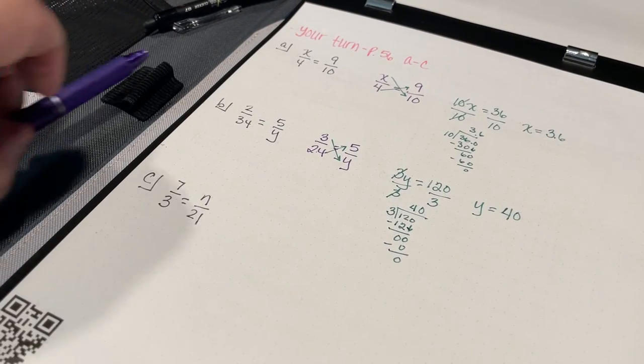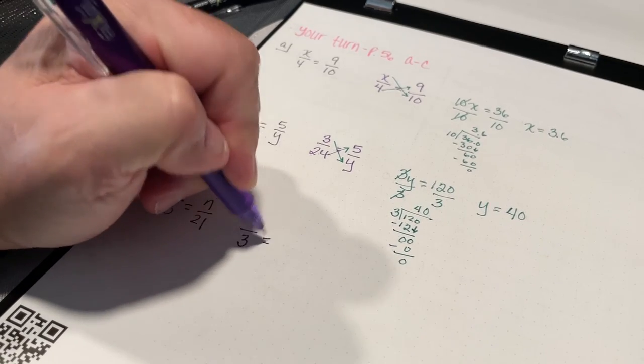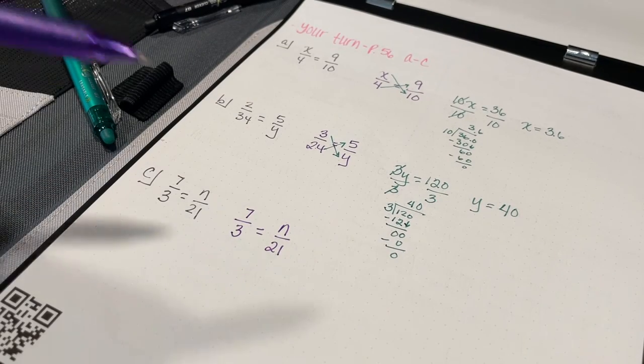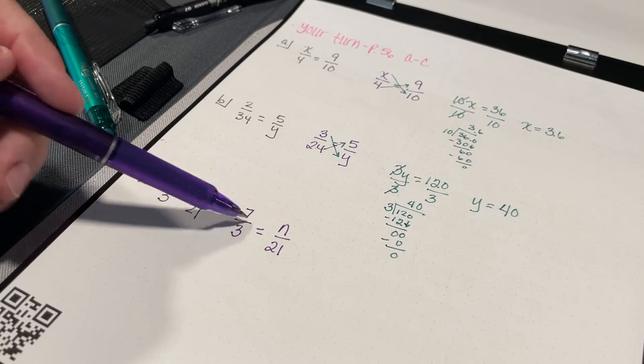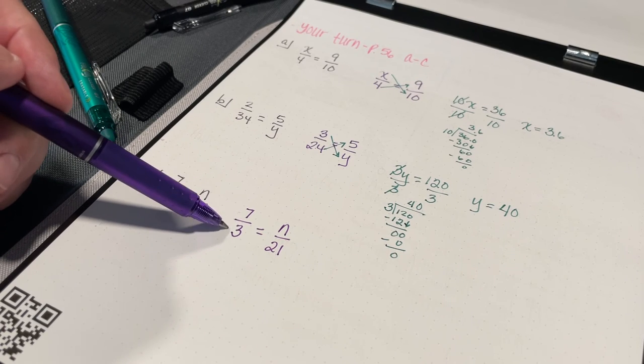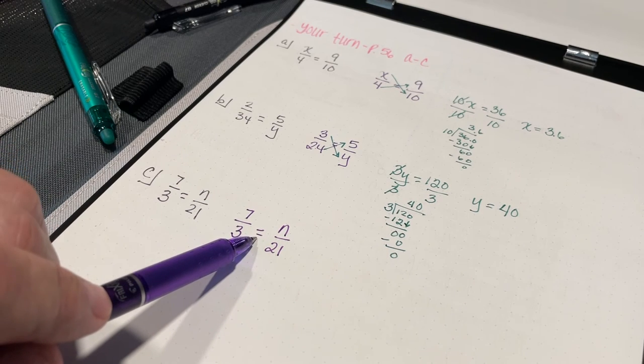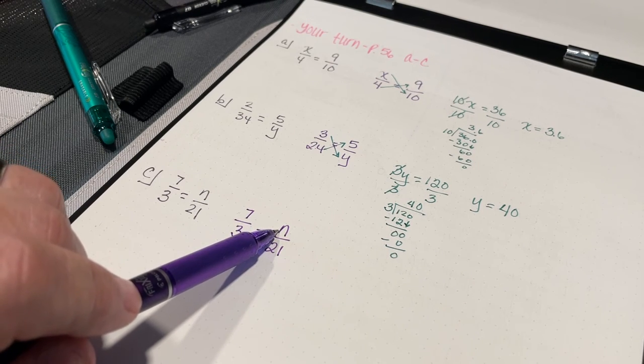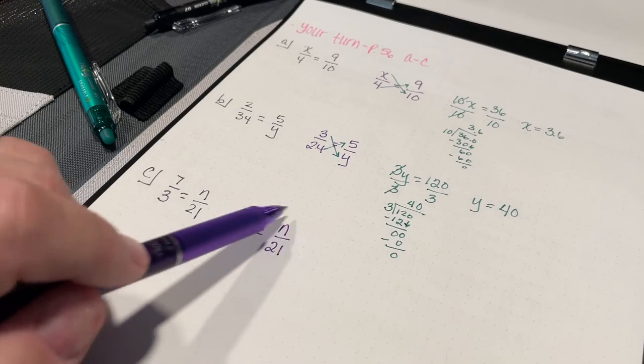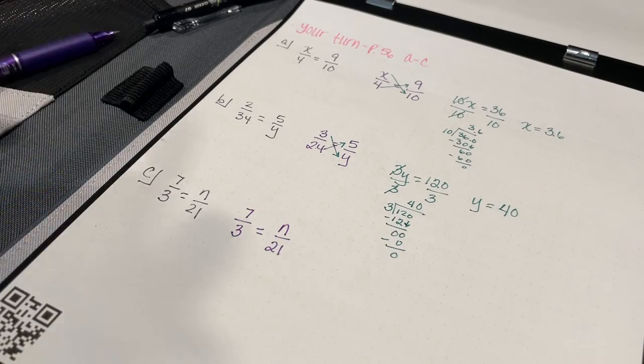Now let me do the last one here. 7 thirds, or 7 over 3, equals n over 21. Now before I even solve this, I just want to look at my fraction so far. I have a fraction that is larger than one whole. I have an improper fraction. If these are going to be equal, then whatever number n is representing has to be a number larger than 21, because this fraction also has to be an improper fraction. So let's see if that's true.